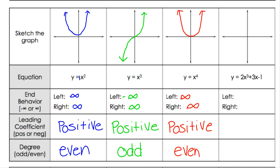Now we have a bigger polynomial with three terms: 2x³ + 3x² - 1. If you graph that, it looks something like this. The left side is pointing downwards towards negative infinity and the right side is pointing upwards towards infinity. Our leading coefficient is a 2, so that is positive, and our degree is third degree, which is odd.